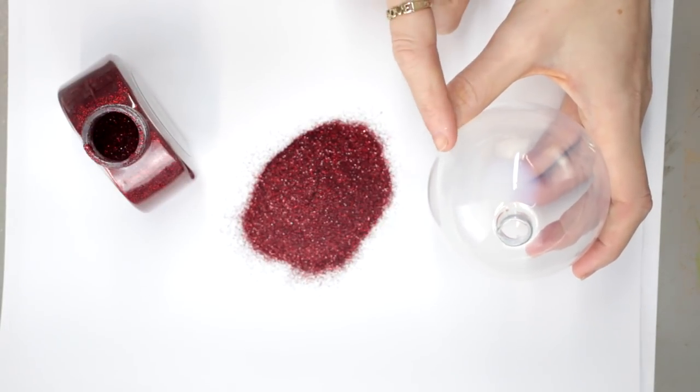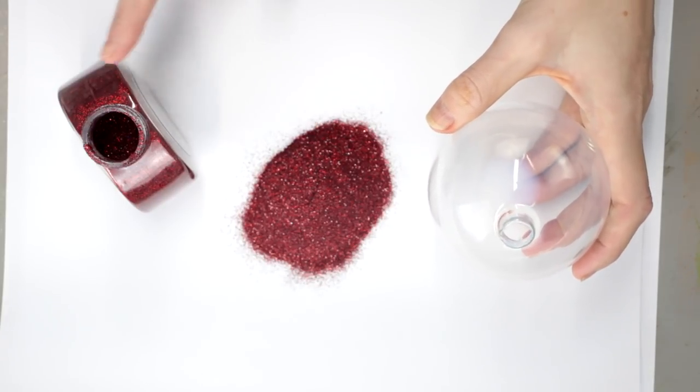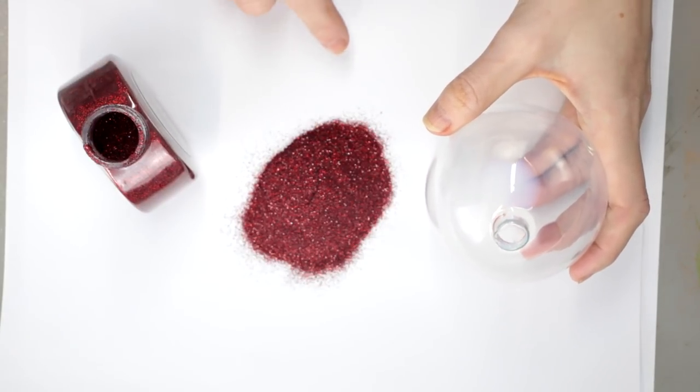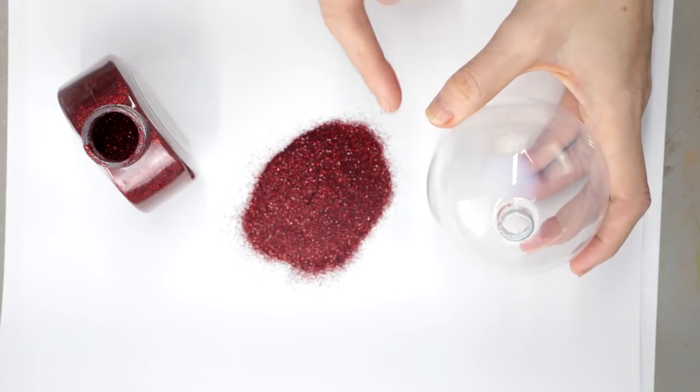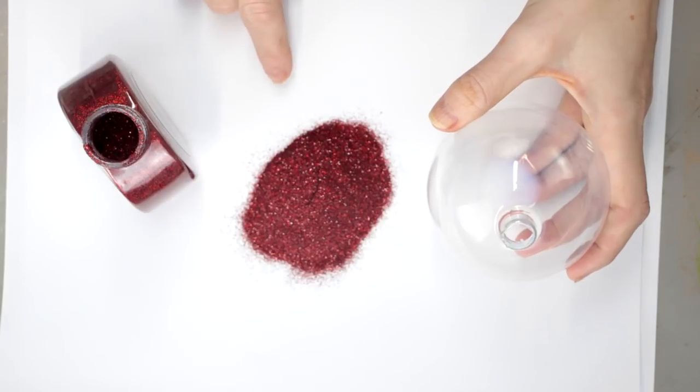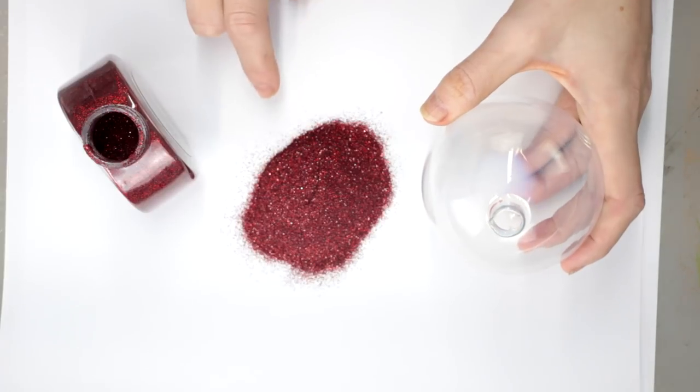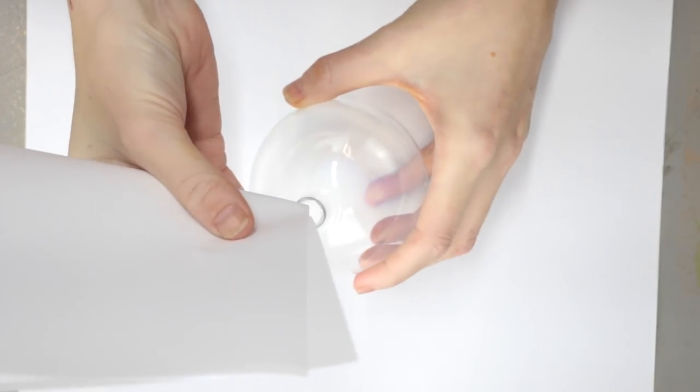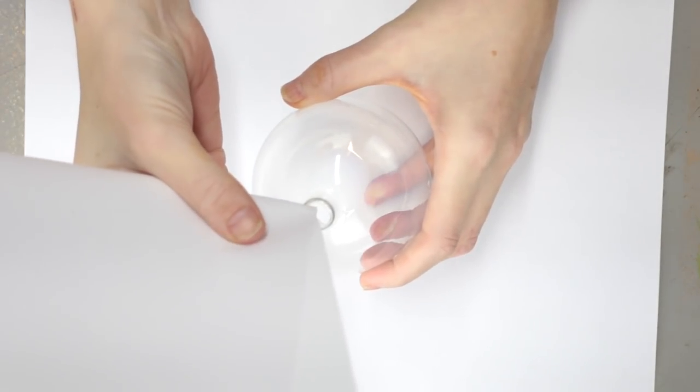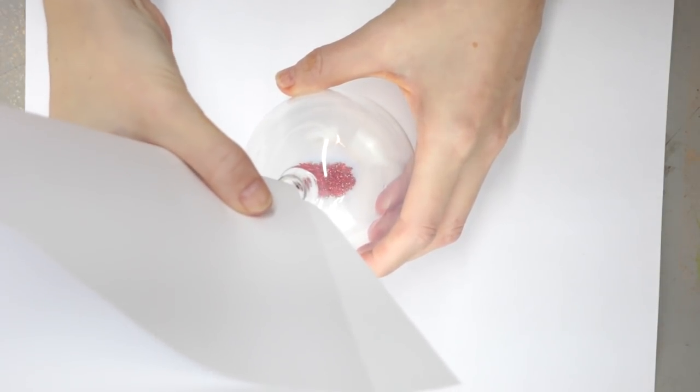As long as you remove the excess liquid from your bauble, you'll be able to place your glitter back in the pot. If you've still got excess in the bauble, you'll want to decant the glitter onto paper and remove the bits touched by the liquid. So I'm just going to make a funnel with my paper and start putting my glitter in.